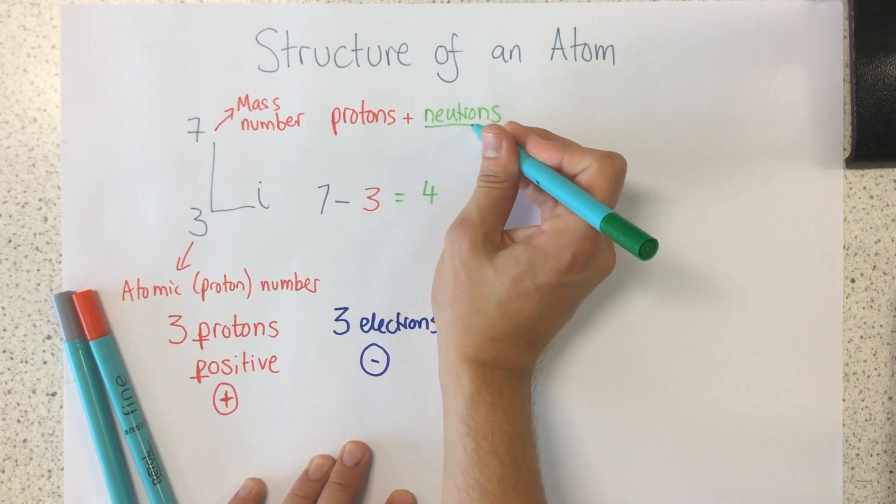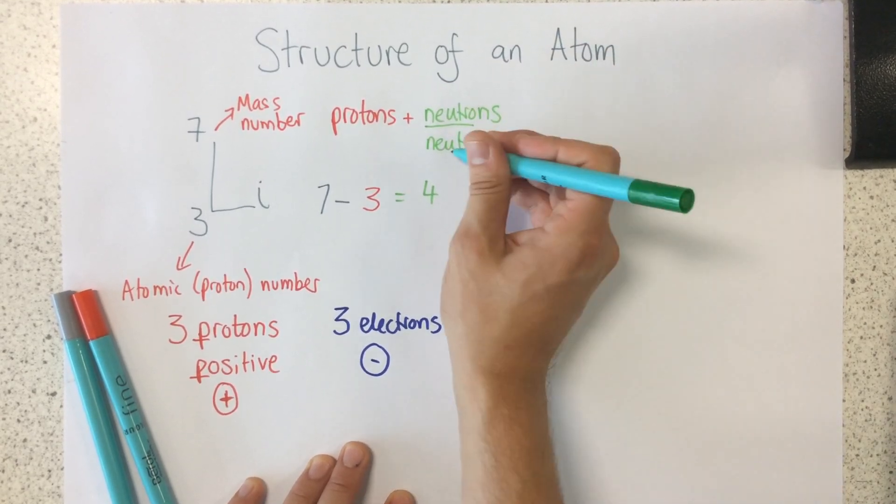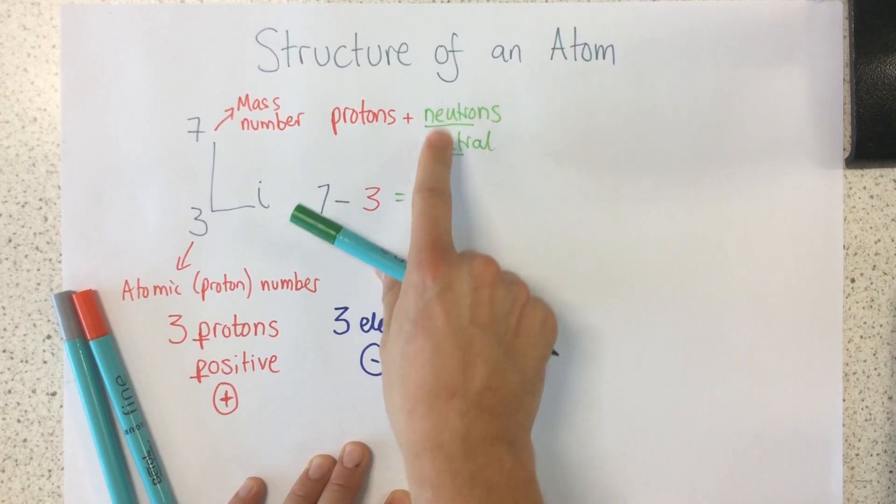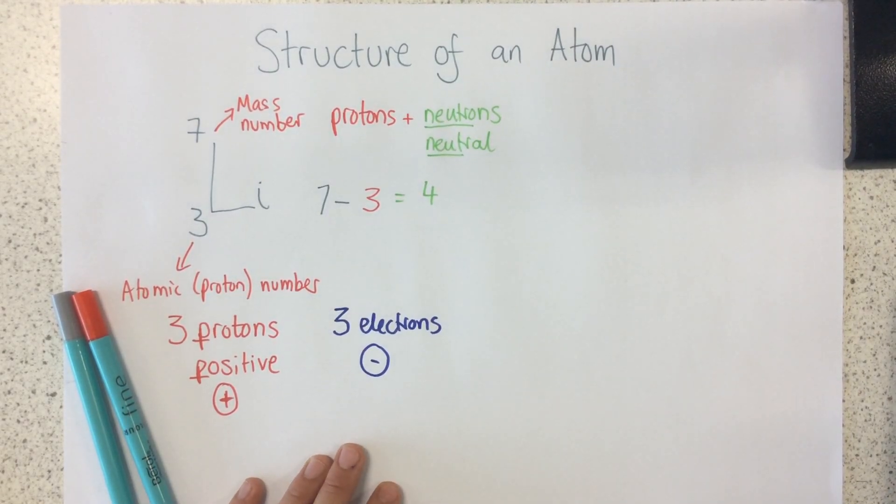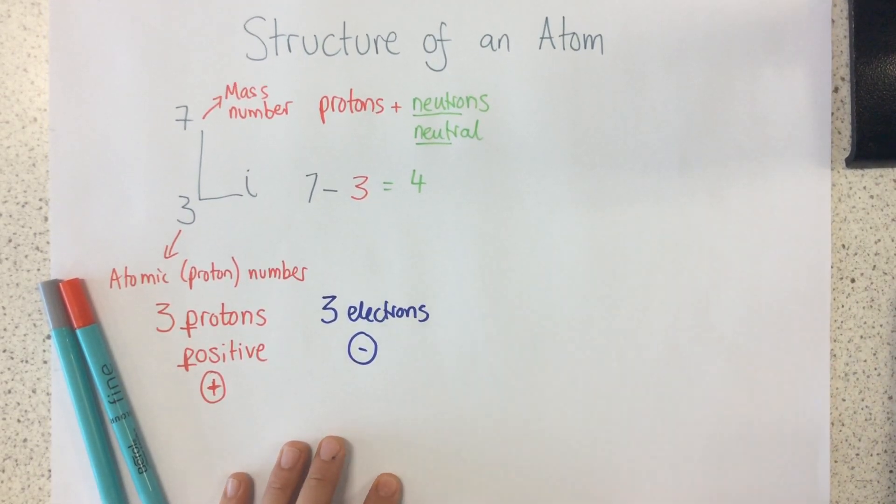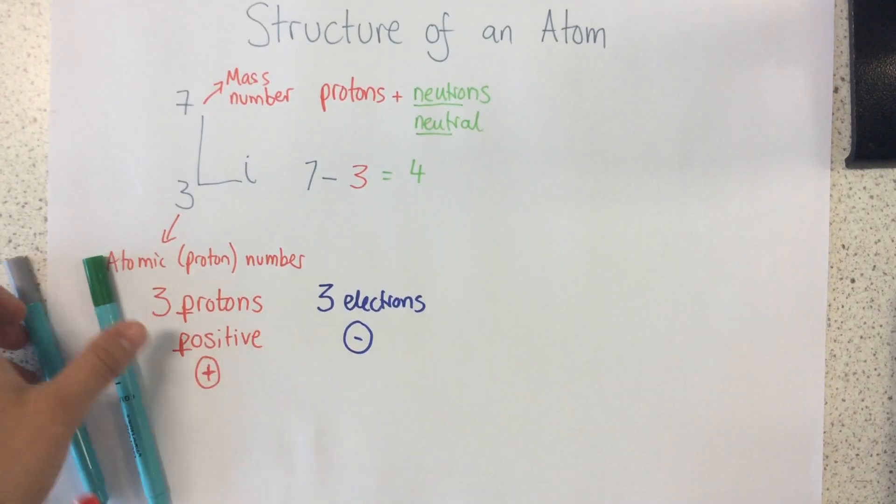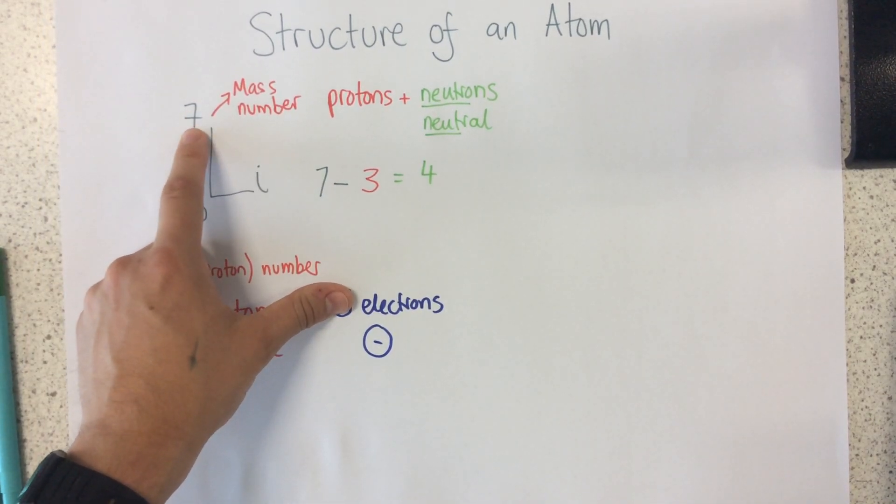Now, I know that neutrons are neutral, which means they don't have any charge at all. So the start of these words can help me with that. So what I need to do now is I need to know whereabouts in an atom each of these are located.